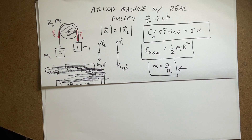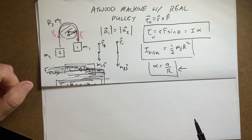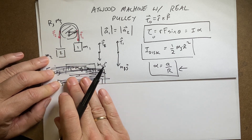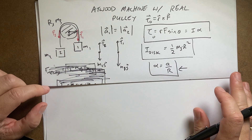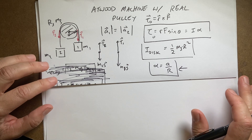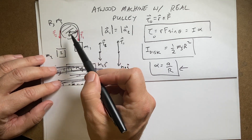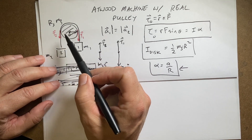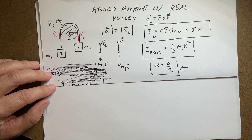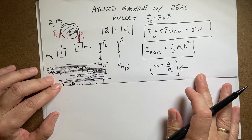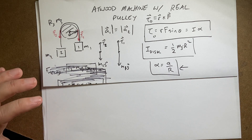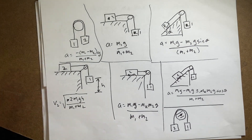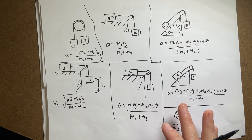I'm continuing my series on Atwood machine problems and I've actually already started this one — I solved it in the previous video but I'm going to do it again. So the idea here is an Atwood machine with a pulley that's not massless, and I want to solve this problem. I've scratched out and started over, so let me show you a quick review of what I've done so far.